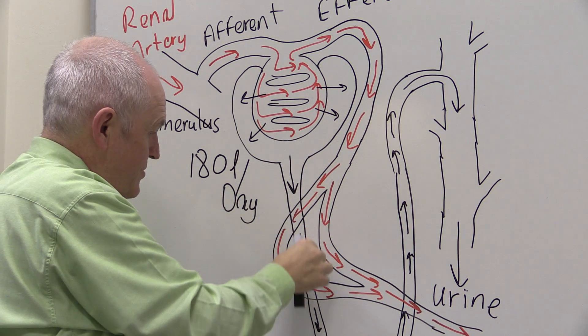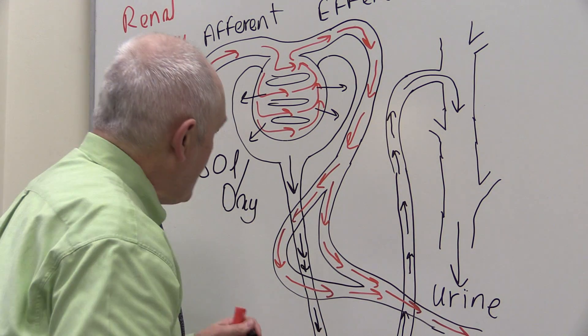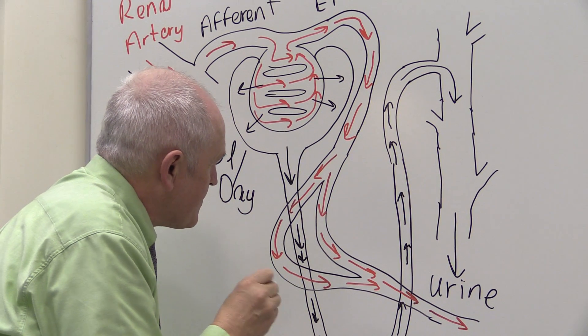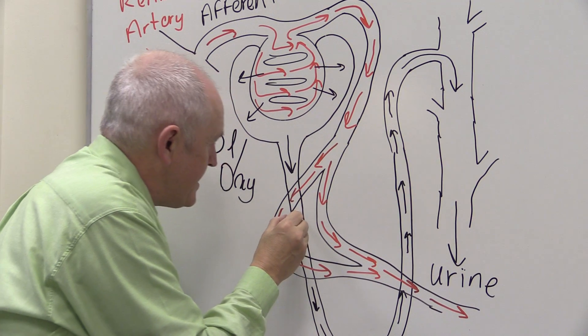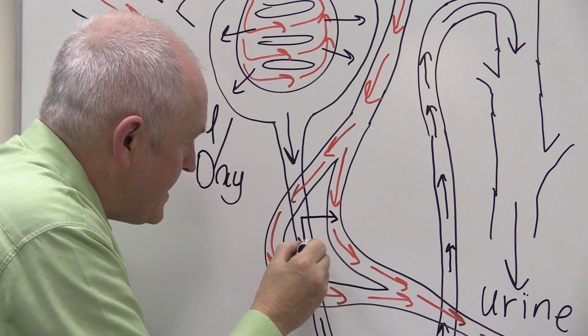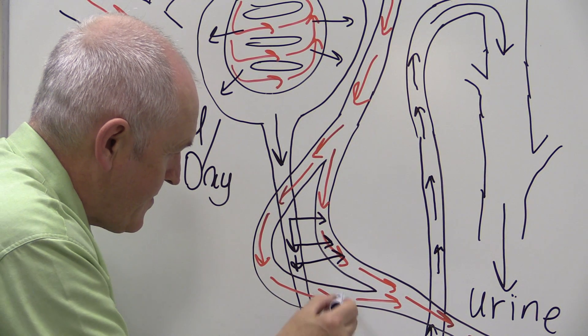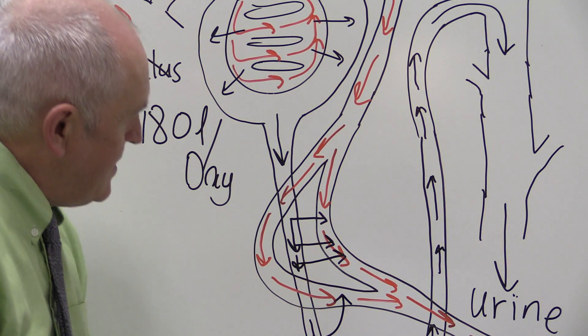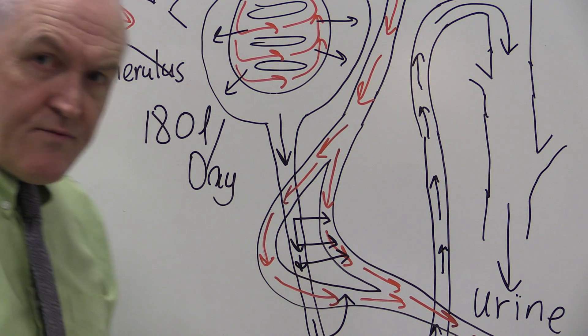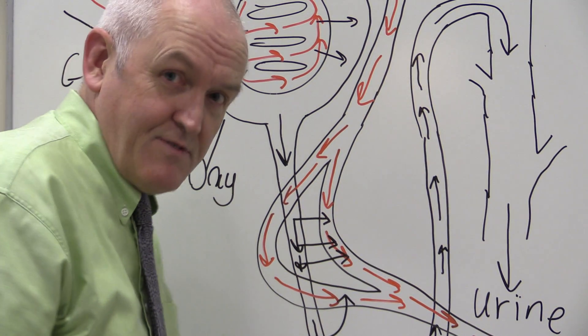But then, as this material goes through the nephron, what happens is most of it, most of the water especially, is going to be reabsorbed. So from the nephron into the peritubular capillaries, there's going to be this process of reabsorption. So there's reabsorption. And on an average day, you might pass, say, 2 litres of urine. Let's suppose it's a 2 litres of urine day.